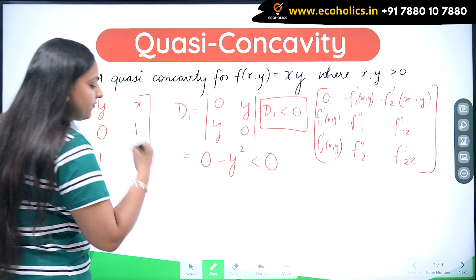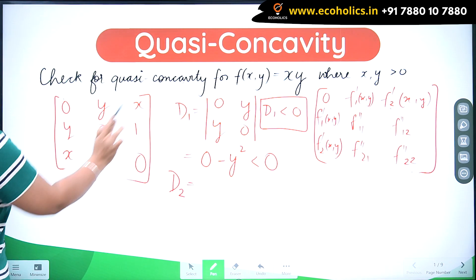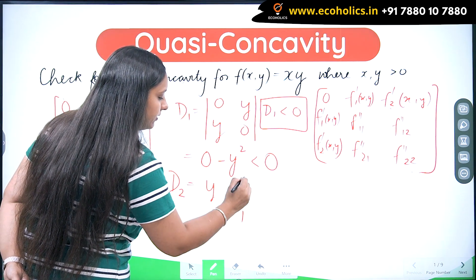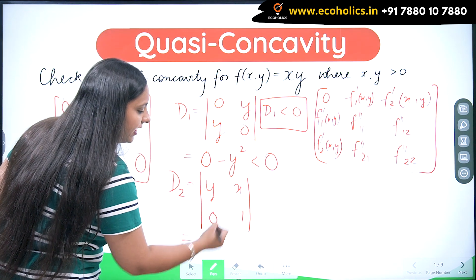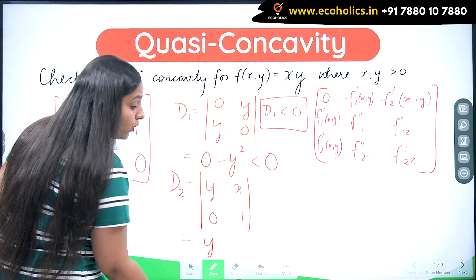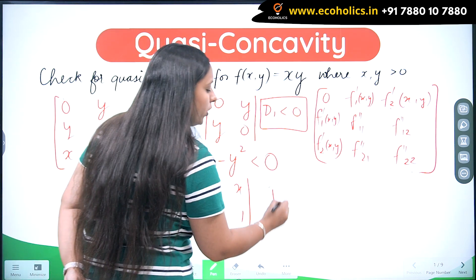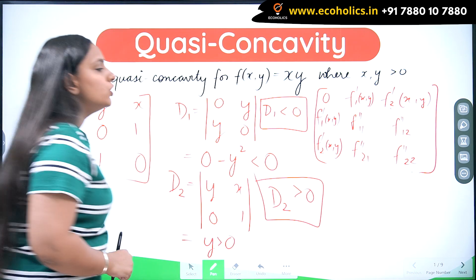Now let me work with D2. When I come to D2, this is my D2. Let me find the determinant: I am going to get y minus 0, so I have got y. Now I know y is strictly greater than 0, so I have got D2 strictly greater than 0. It means my odd determinant is negative and my even determinant is strictly positive.